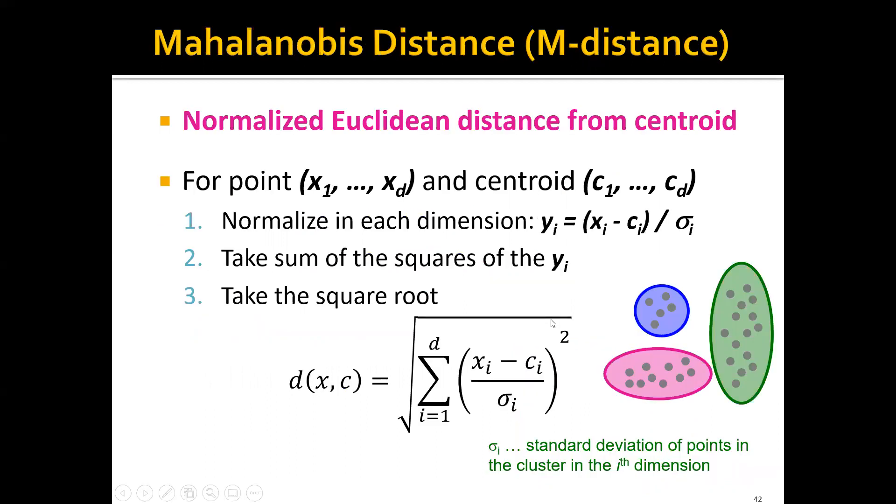So what is M-distance? You can think of M-distance as a normalized version of Euclidean distance from the centroid. For point x1 through xd and centroid c1 through cd, this is one point and this is the vector representing the centroid. We'll have d dimensions. In the first step, we'll normalize in each dimension using this equation. It's just the distance between xi and ci, divided by sigma i. Sigma i is the standard deviation of points in the cluster in the i-th dimension.